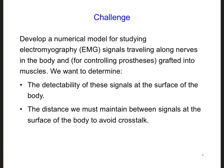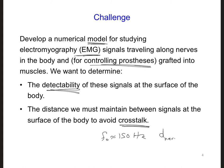For this design challenge, we are tasked with helping Dr. Kuyken and his team develop a model of the EMG signals traveling along nerves in the body and into the muscles of the chest, in order to control the prostheses — so that we can test the strength or the detectability of the signals once they reach the surface of the chest, and we also want to make sure that we avoid any issues with crosstalk between the signals. Note that the mean frequency of the EMG signals is about 150 Hz, and the diameter of a major nerve in the body is on the order of 1 mm.